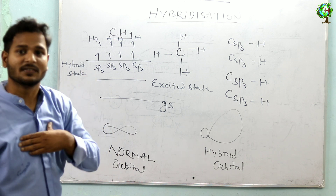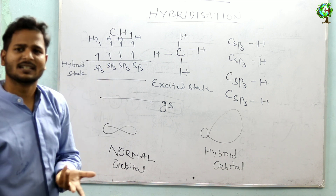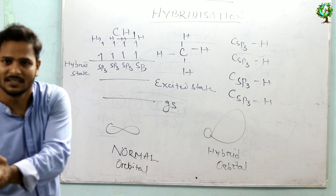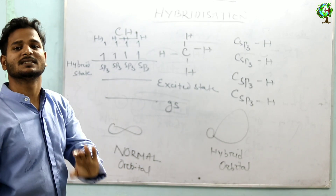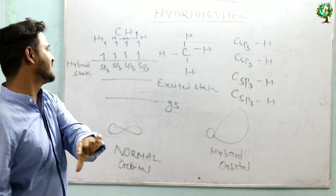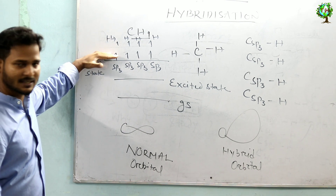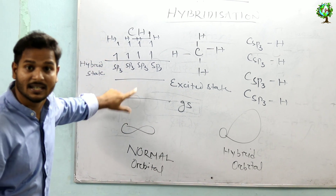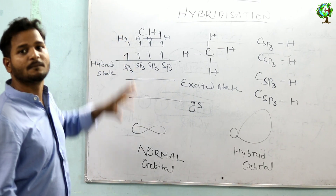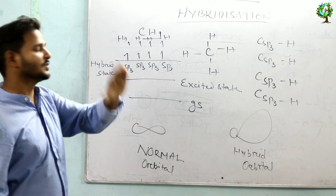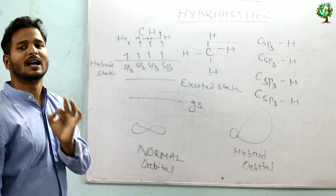So after hybridization, if we form covalent bonds, they lose more amount of energy. And you know that energy is always proportional to stability — more energy released means less energy remaining, which means the molecule formed after the hybrid state is stable. This is the ground state, excited state, hybrid state. This hybrid state is at higher energy than the ground state and excited state. In this state, if the molecule is formed, after formation more amount of energy is released.